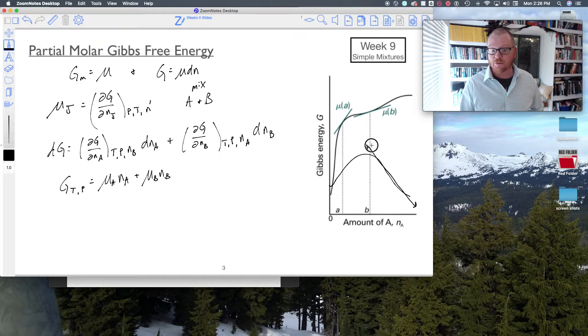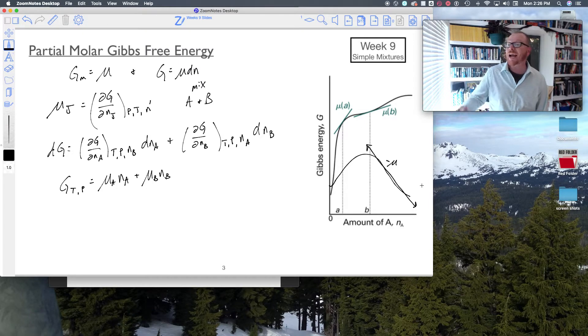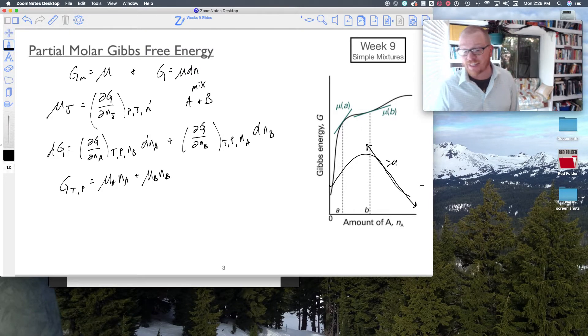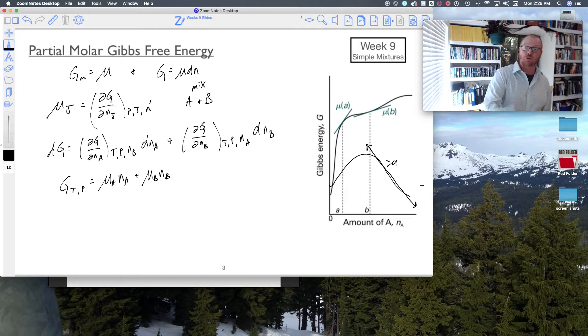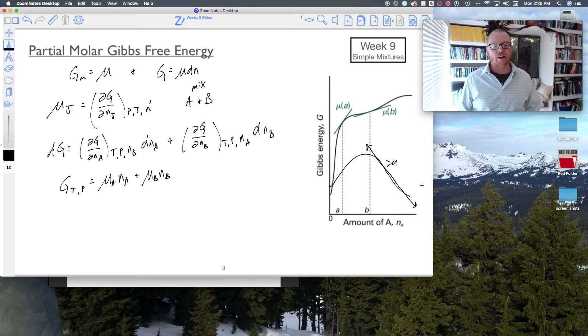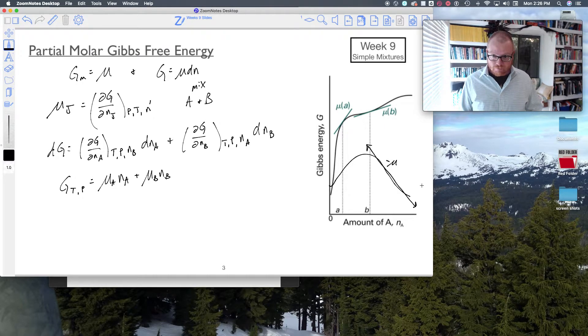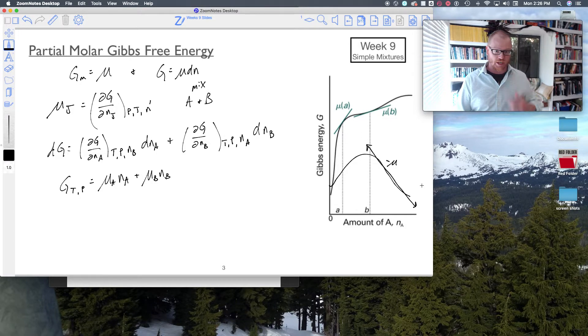And so the effect of that, of having a negative slope right there, that would actually tell us that there's a benefit to adding that particular species to this other species. So it would tell us there is a strong interaction between A and B if it's lowering the chemical potential.